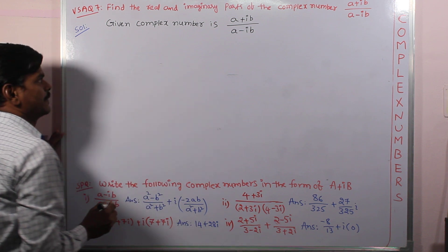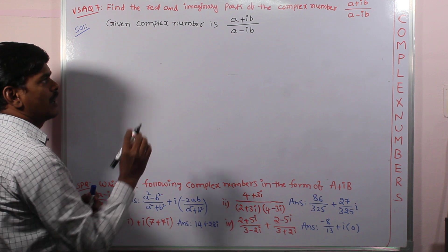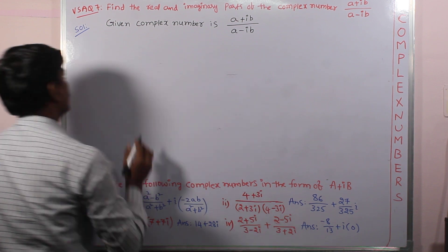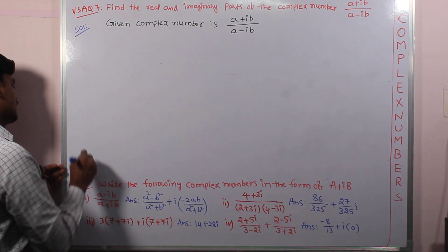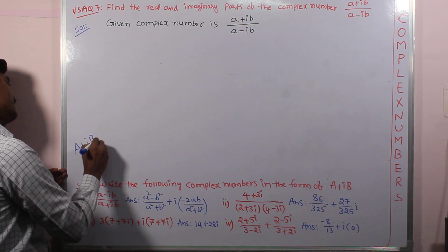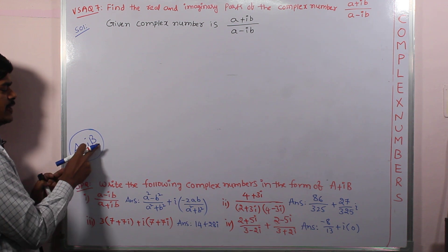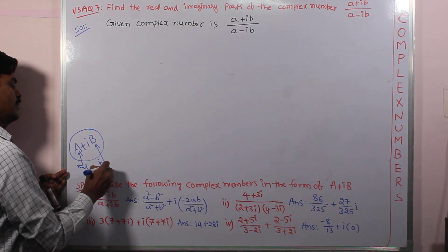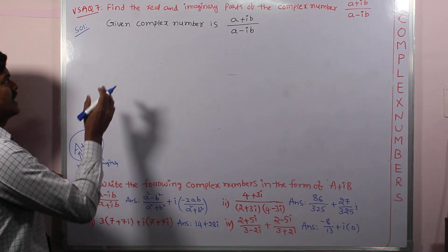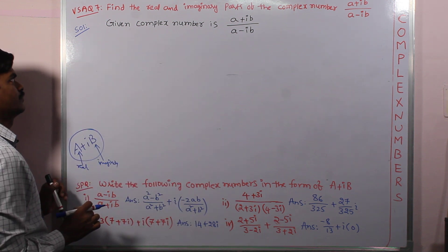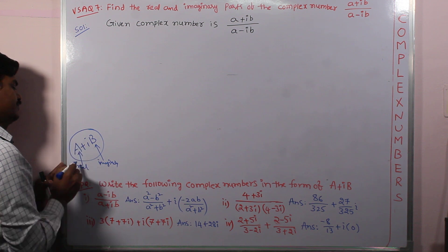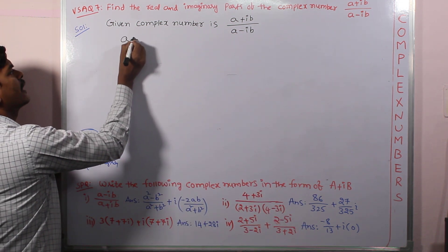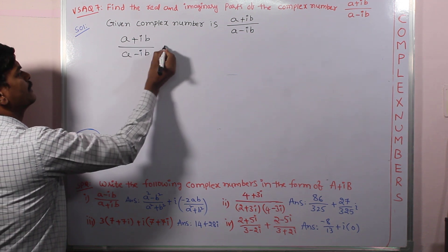Every complex number has two parts: a real part as well as an imaginary part. If the given complex number is converted into the form a + ib, then a is called the real part and b is called the imaginary part. So to find the real and imaginary parts of the given complex number, we have to convert it into a + ib form through simplification.